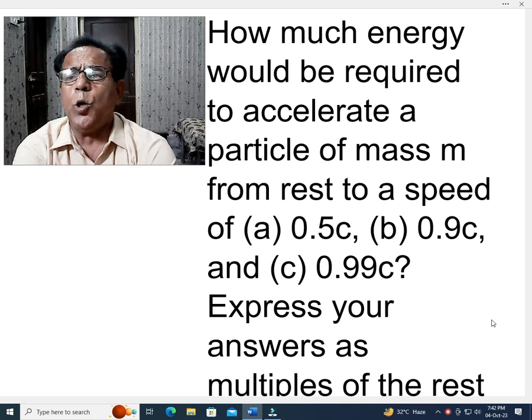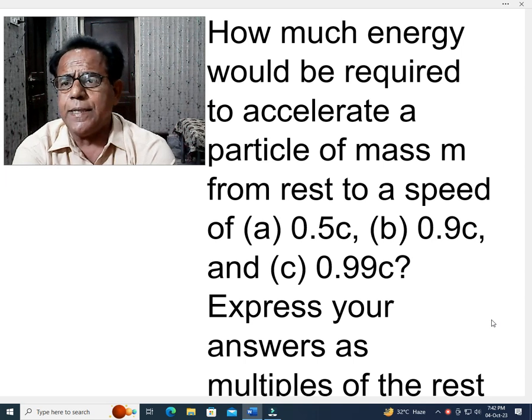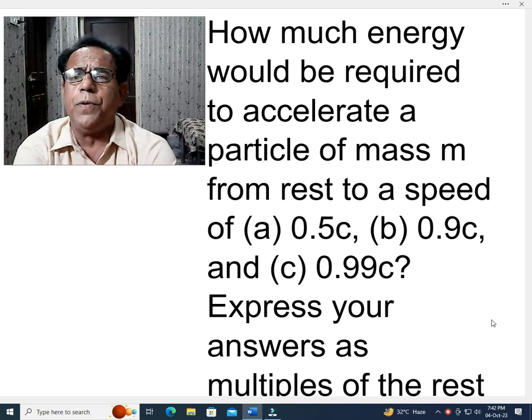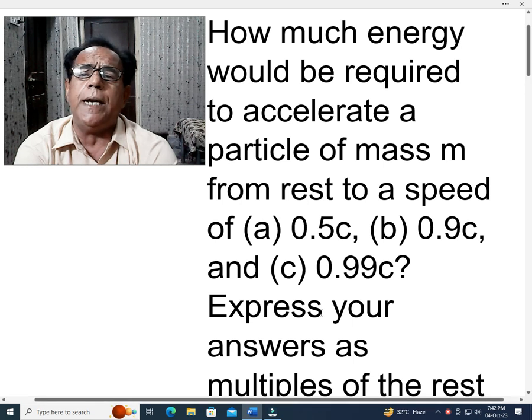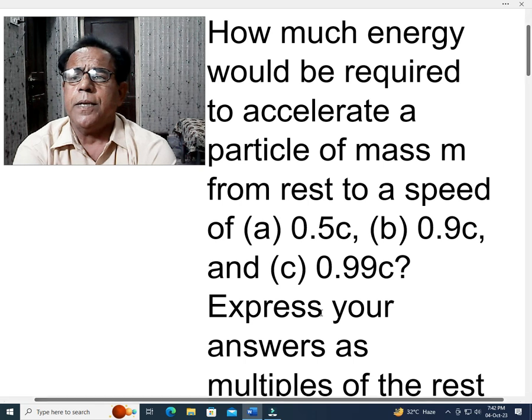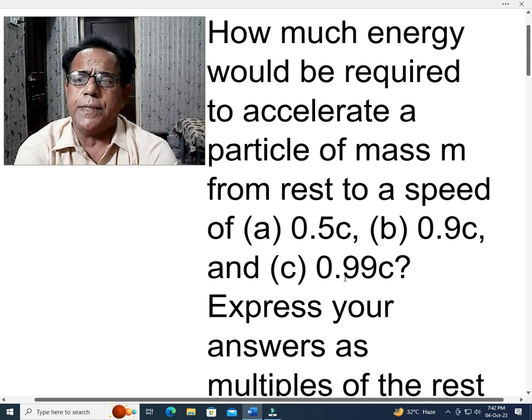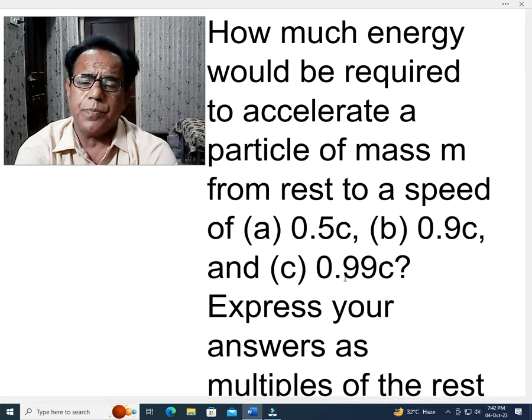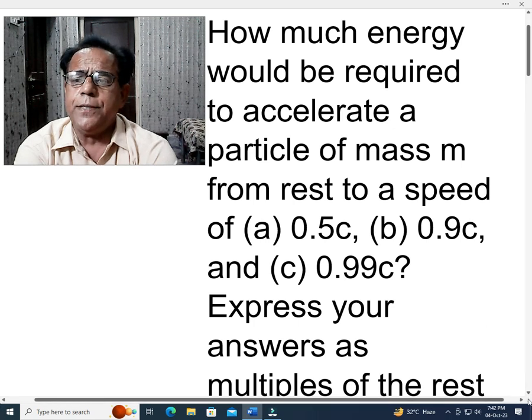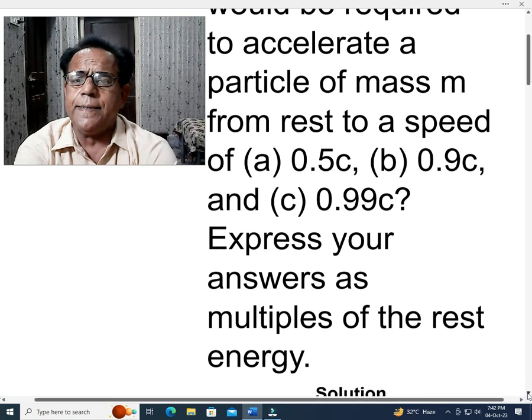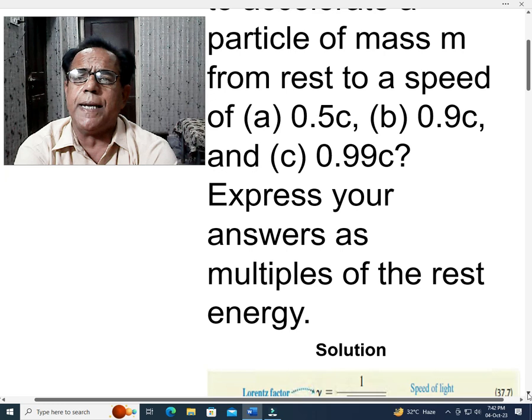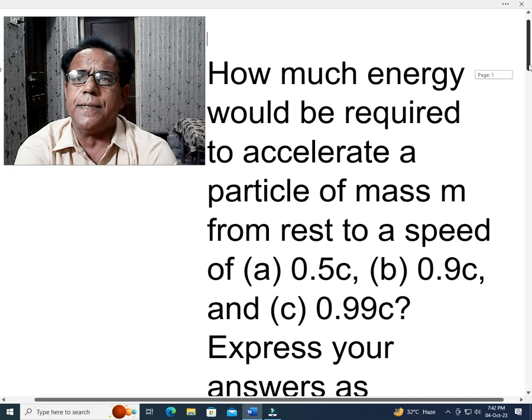Part b 0.9c, that is 90% of speed of light, and part c 0.99c, that is 99% of the speed of light. Express your answers as multiples of the rest energy.